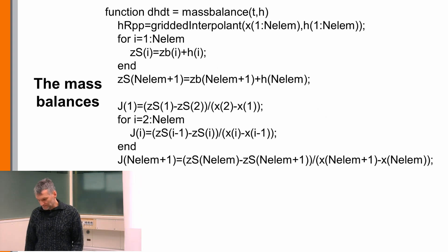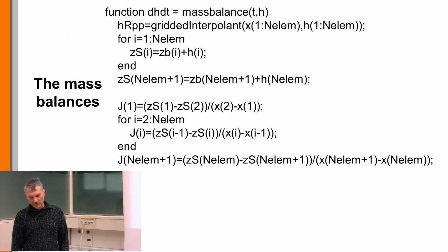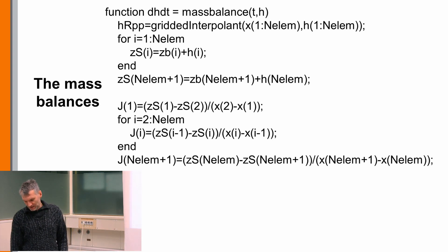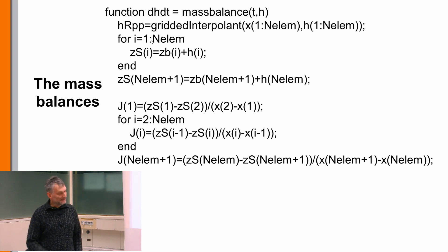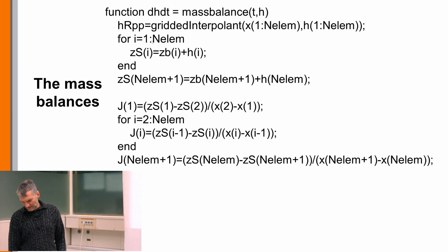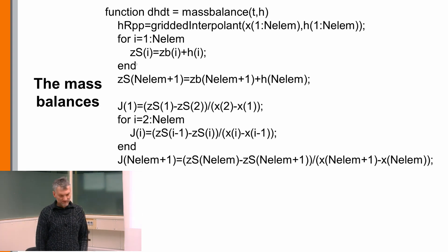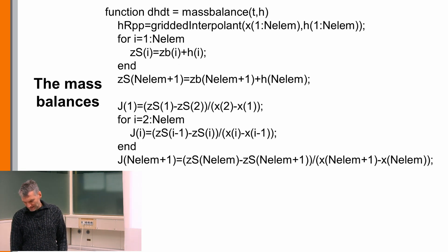First, I define an interpolant to get values from the time step before the actual time step — an interpolator used to get the water depth at points where I do not know it, by interpolation from the last time step. Then I calculate the free surface: free surface equals the bed elevation plus the water height.